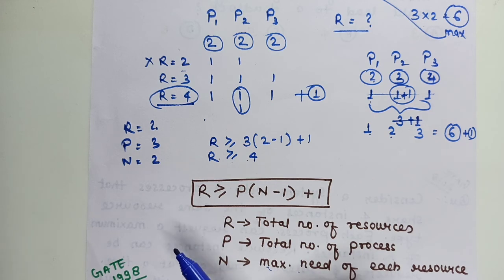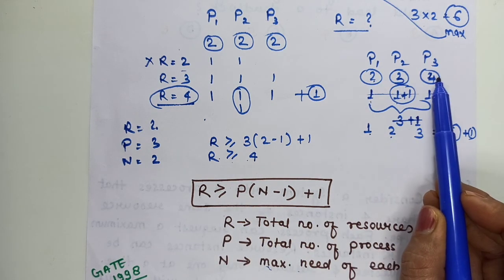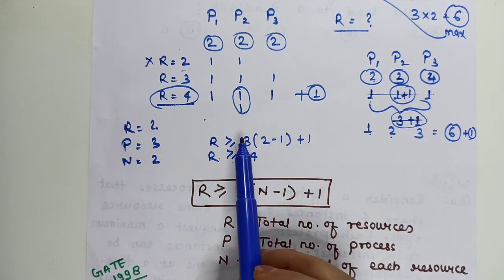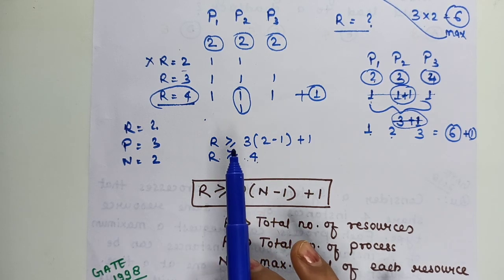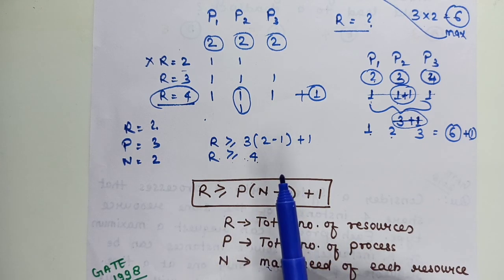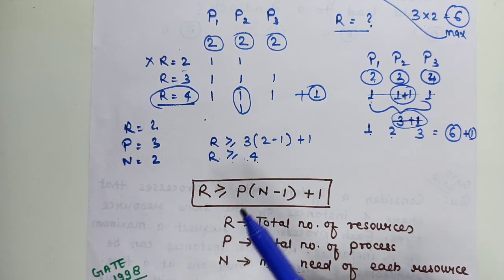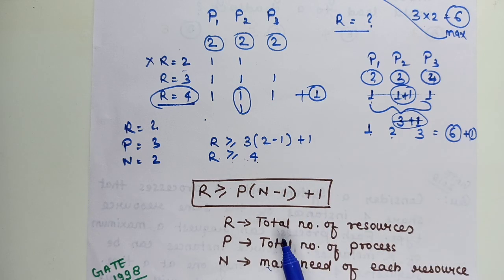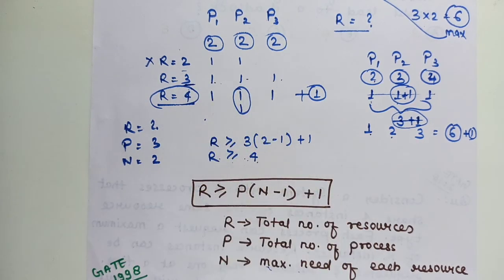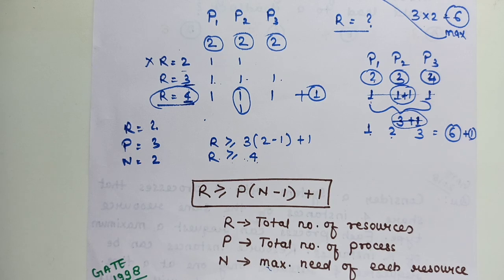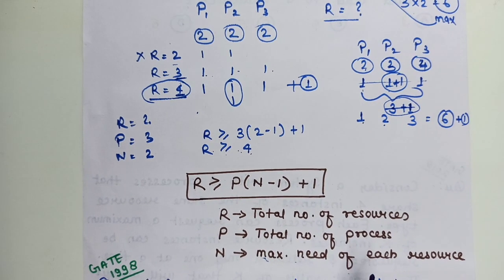And if the question asks: what is the maximum number of instances that may lead the system to deadlock? The answer is 3, because with 3 instances we tried but could not avoid deadlock. With 4 instances, deadlock is avoided. So 3 is the maximum number of instances that may lead to deadlock. There are a few types of questions that can be asked in the exam based on this concept.